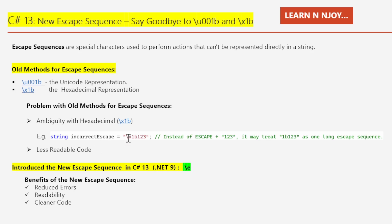Now we are going to talk about the new escape sequence introduced in C# 13 and .NET 9, which is \e. We now have a simpler and clearer way to represent the escape sequence, and this makes our code more readable and less prone to errors. The benefits of using this new escape sequence are: first, reduced errors — there is less chance of mixing up hex digits. Second, readability — it's easier to understand what our code is doing at a glance. Third, cleaner code — it makes our codebase more modern, easier to maintain, and much cleaner.